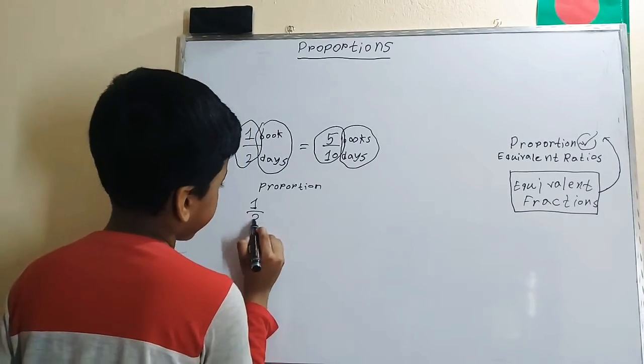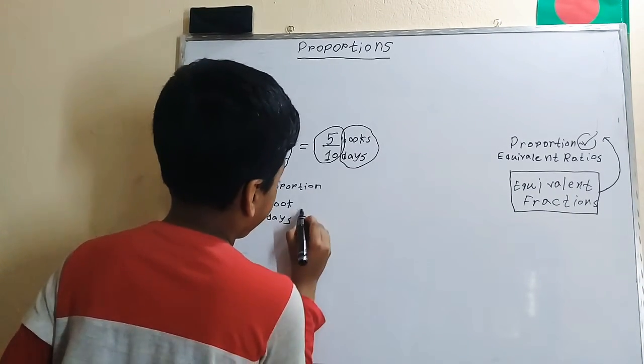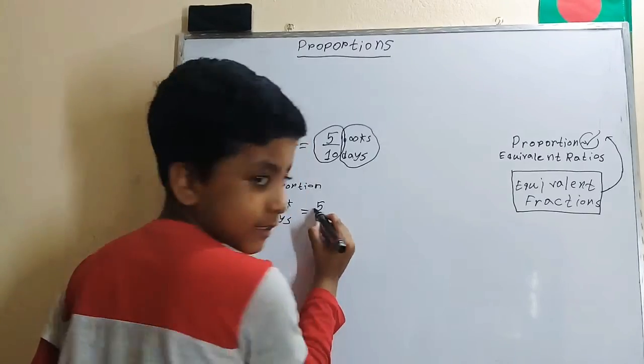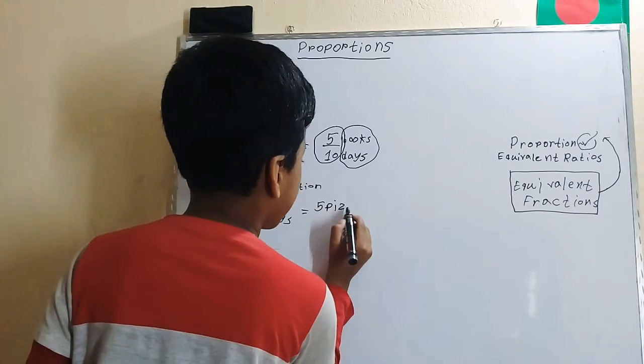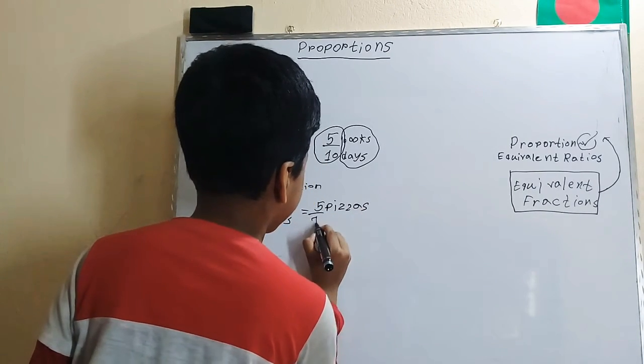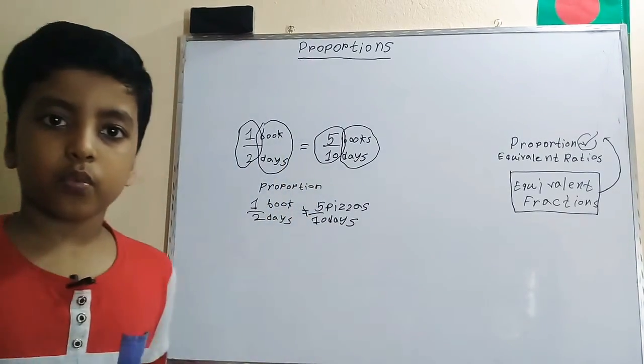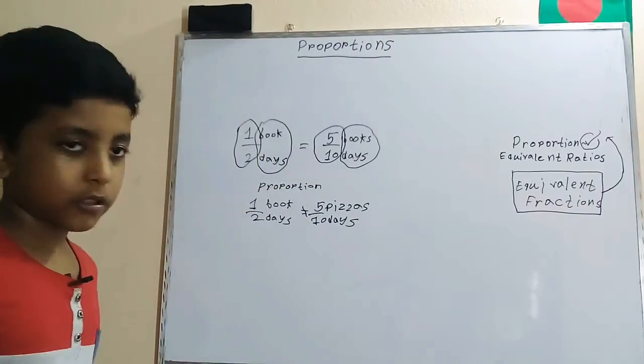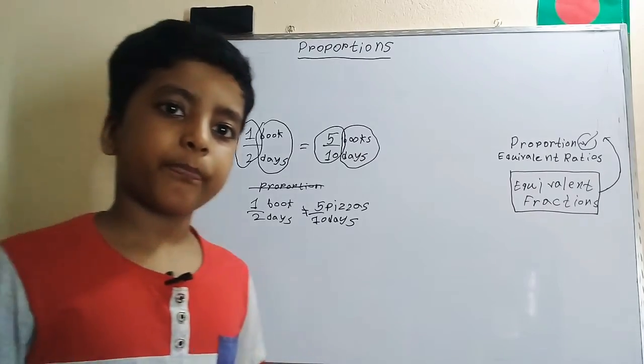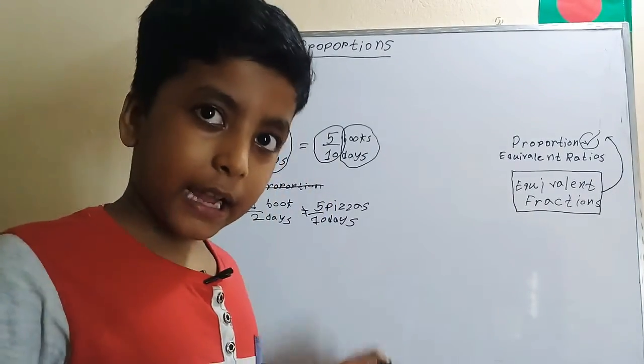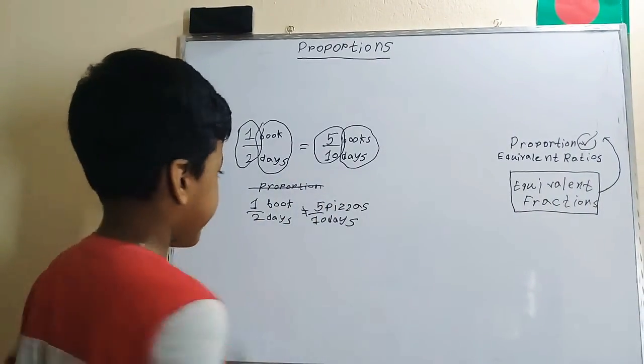So now for it to be a proportion, if we change something in this proportion—what if we change the top number of this second ratio to be pizzas instead of books? Well, five pizzas over ten days is not equivalent to one book over two days, so this is not a proportion anymore.